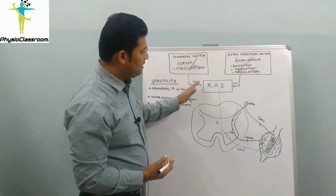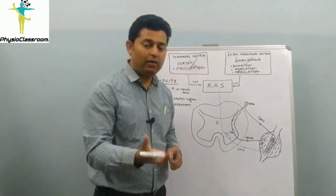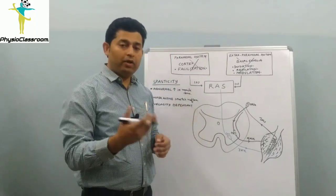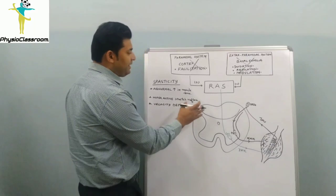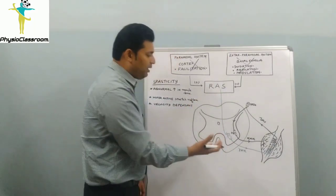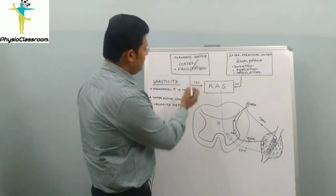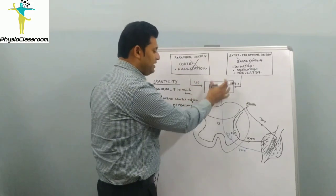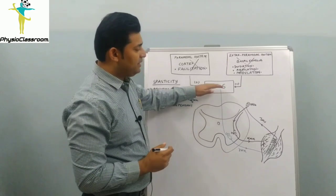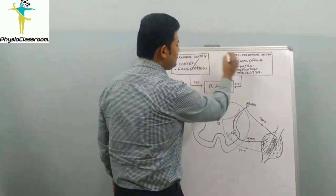The cortex is responsible for the production of voluntary movements and is facilitatory in nature, whereas the extrapyramidal system is responsible for the regulation or modulation of motor movements. In a normal individual, the excitatory discharges from the reticular activating system to the gamma motor neuron are controlled by the higher centers — the pyramidal and extrapyramidal systems — with the cortex facilitating and the basal ganglia regulating or inhibiting the discharges of the reticular activating system.